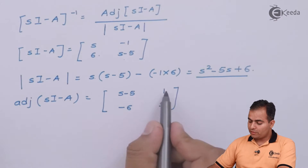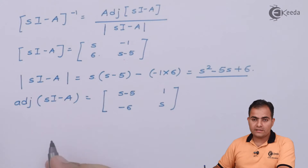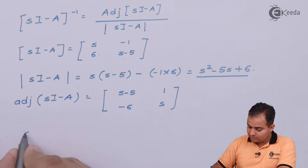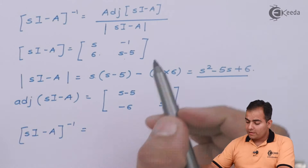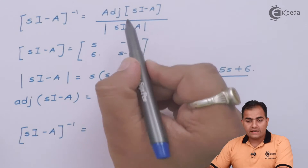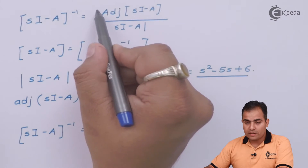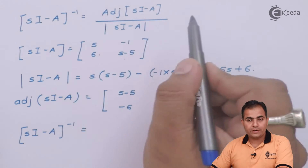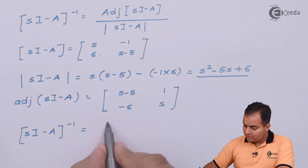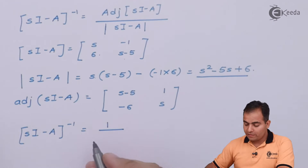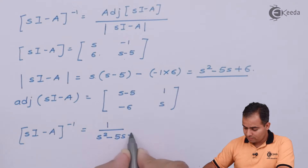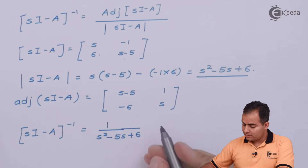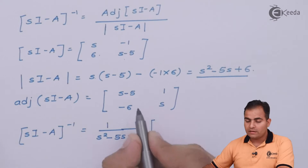Now I substitute these values into the (sI - A)⁻¹ formula. The determinant goes in the denominator, so I write 1/(S² - 5S + 6) multiplied by the adjoint matrix, giving me the full expression for (sI - A)⁻¹.